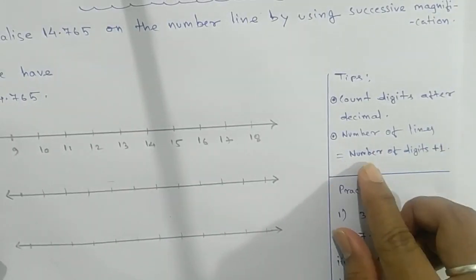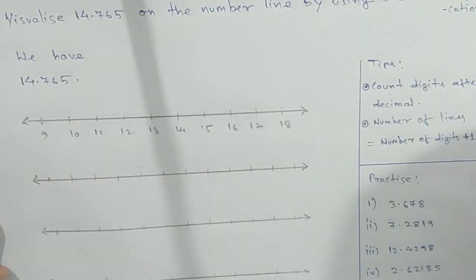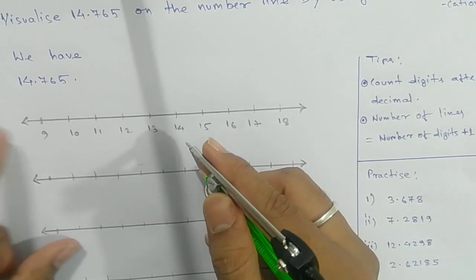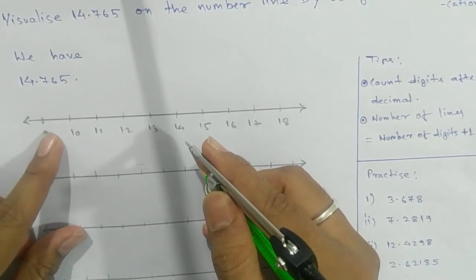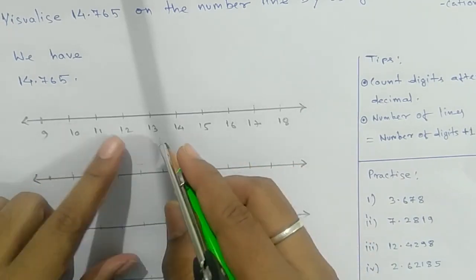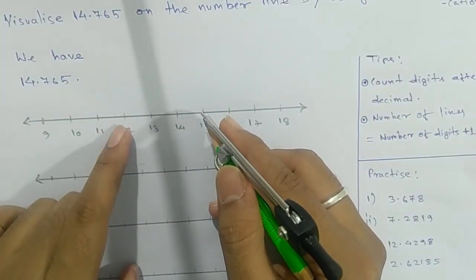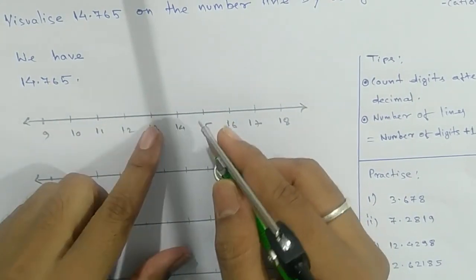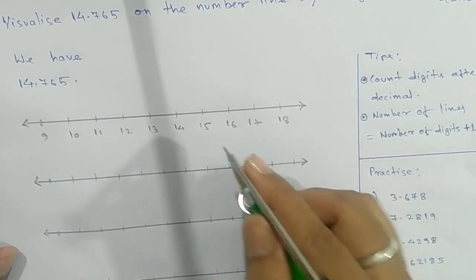That means you need one, two, three, four number lines. The number of lines equals the number of digits plus one. We need 14 and 15 compulsory. You can start with 12, 13, but 14 and 15 are very much compulsory.